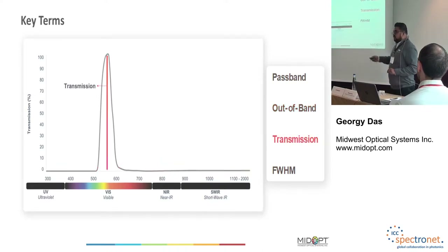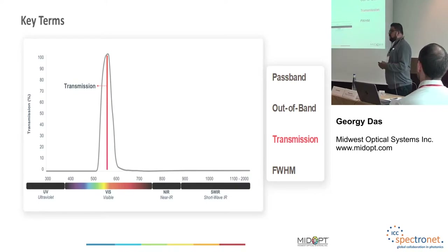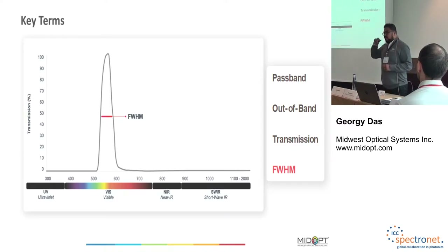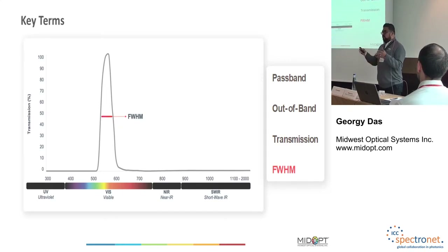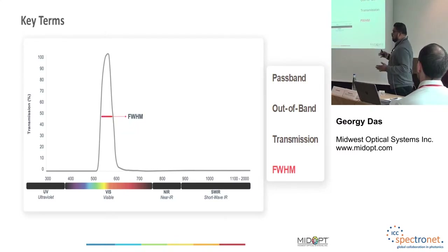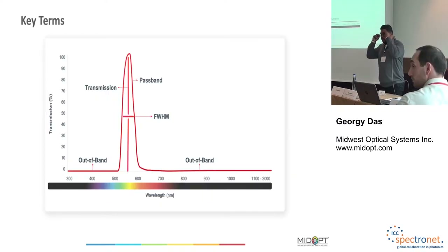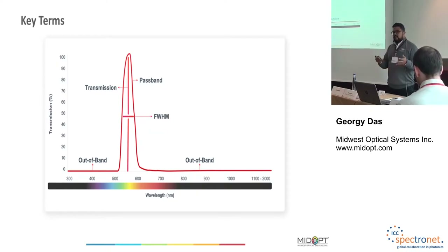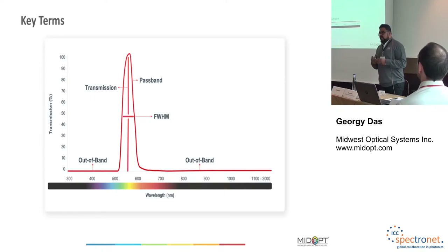Out of band lets you know what part of the wavelength is being blocked. If I say a filter has very good out of band blocking, it means it's doing a good job of suppressing potentially interfering wavelengths. Transmission tells you how much of a wavelength is being passed. The full width half max — abbreviated FWHM — refers to how wide the pass band is. If you're using LED lighting you want a wider pass band; if you're using a laser you want something narrower. So the transmission curve tells you what's being passed and what's being blocked — that's what a filter does.